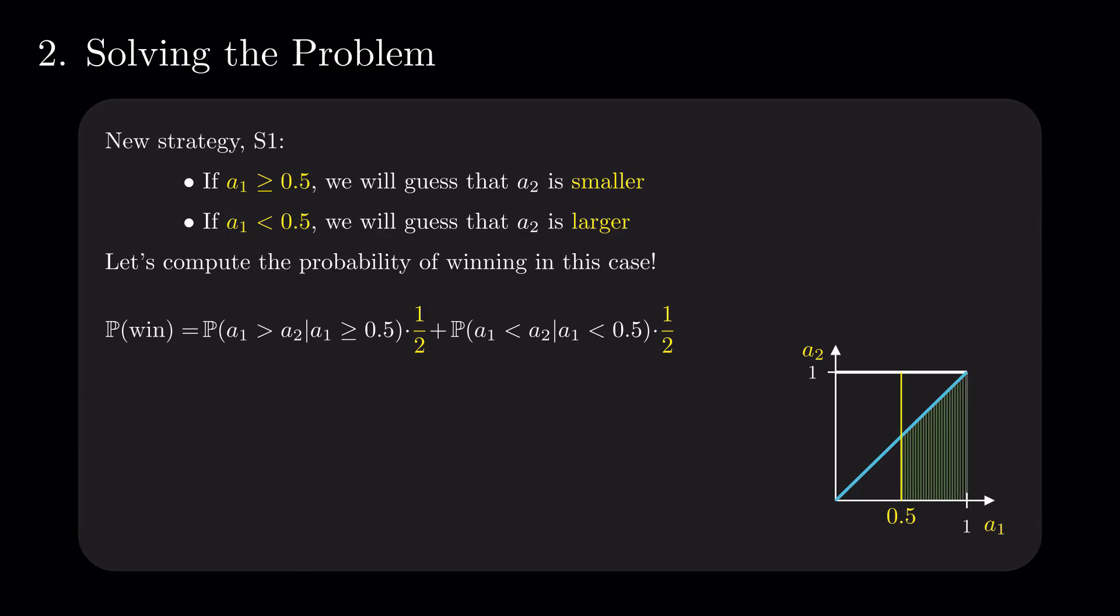Since A1 and A2 are known to be uniform and independent, the probability that A1 is greater than A2 under this condition is the ratio between the green area and the entire restricted area.